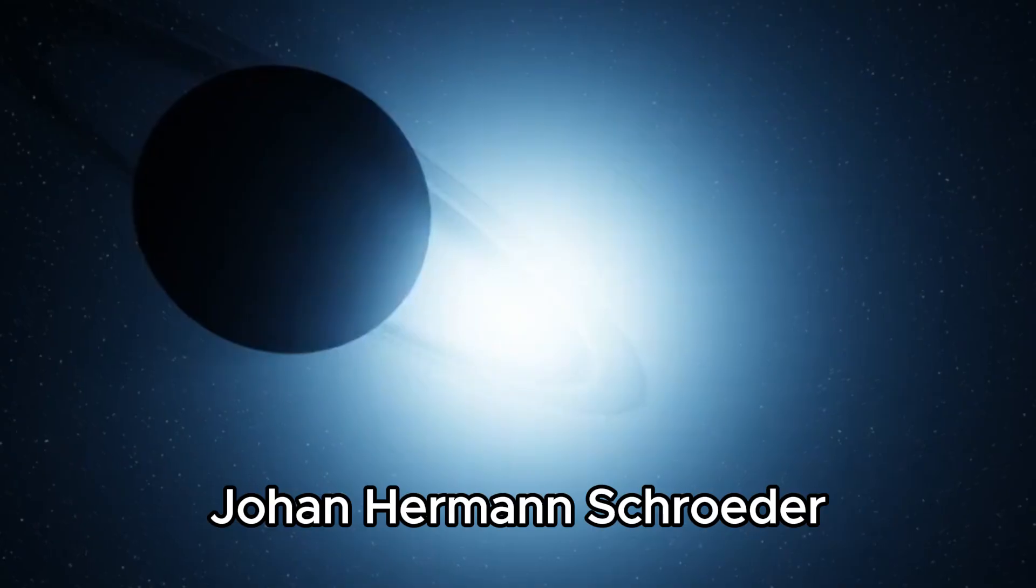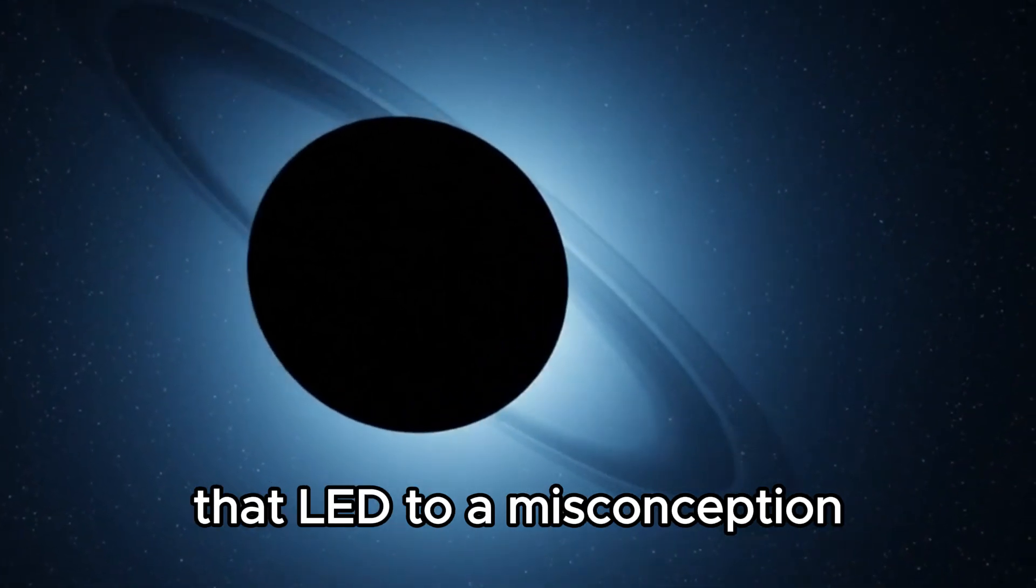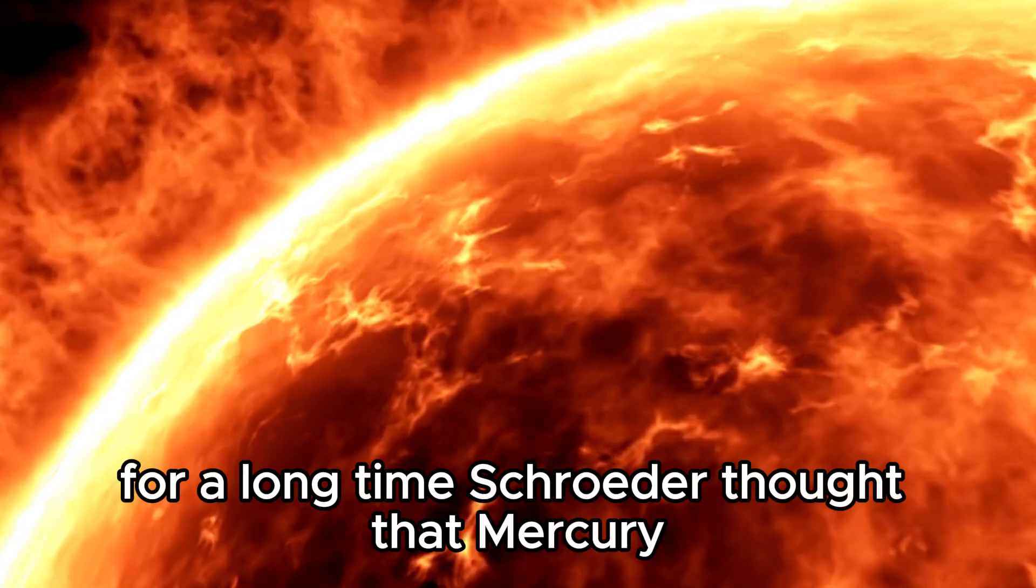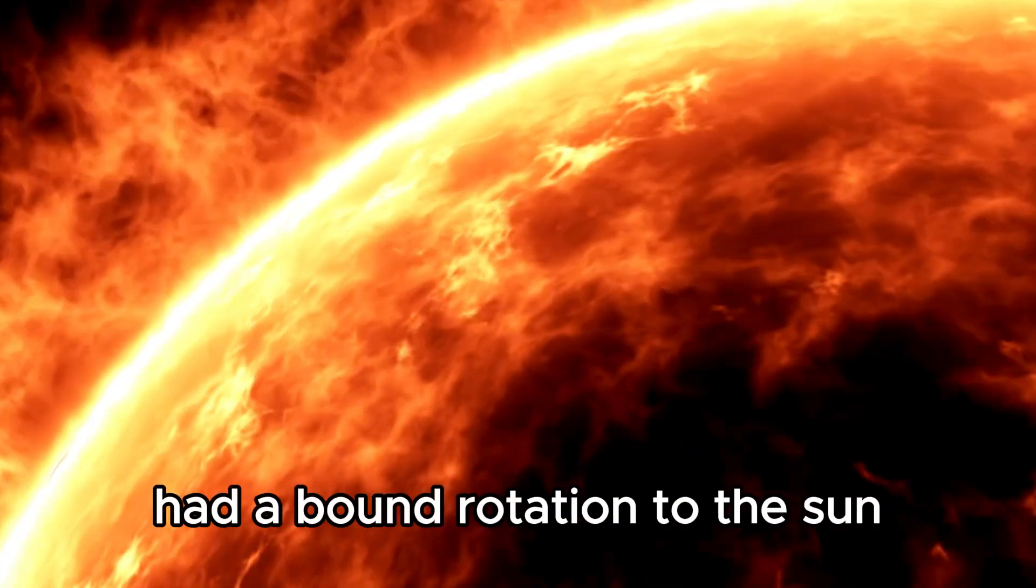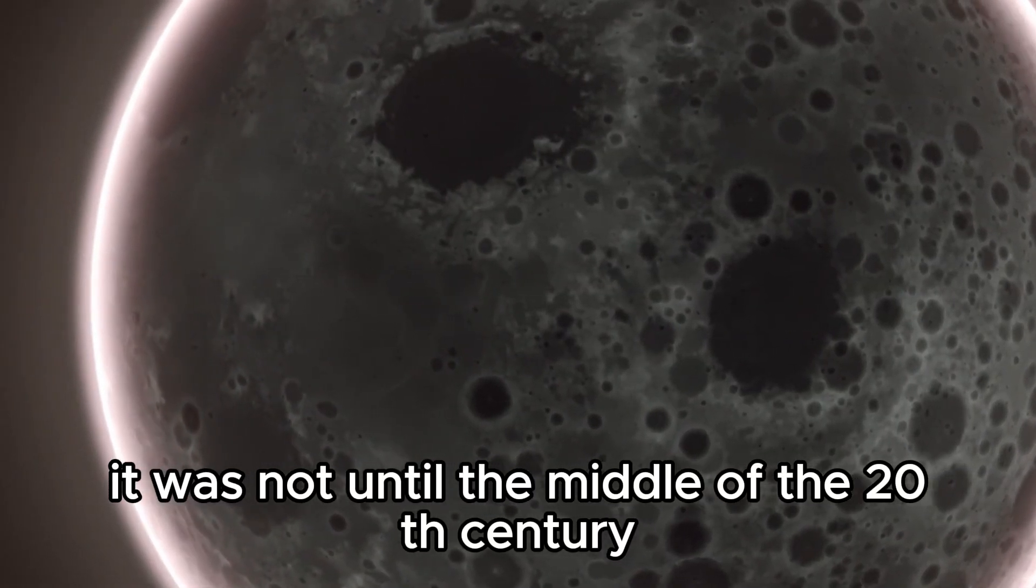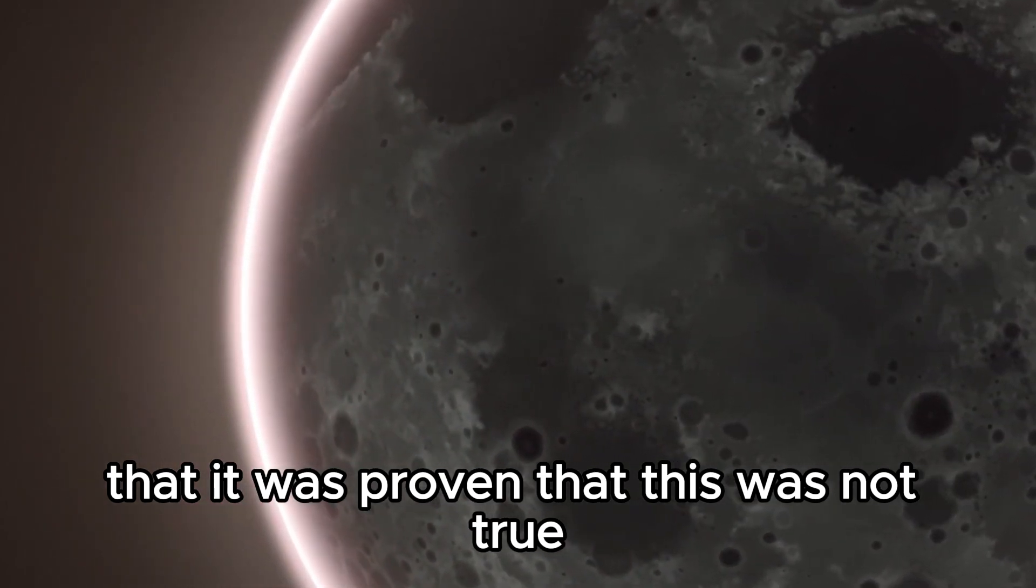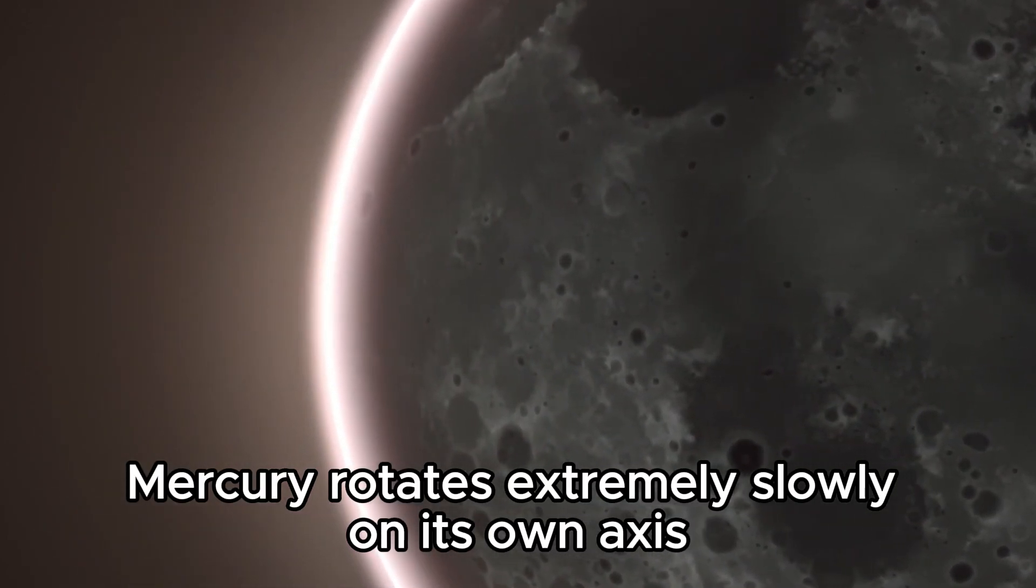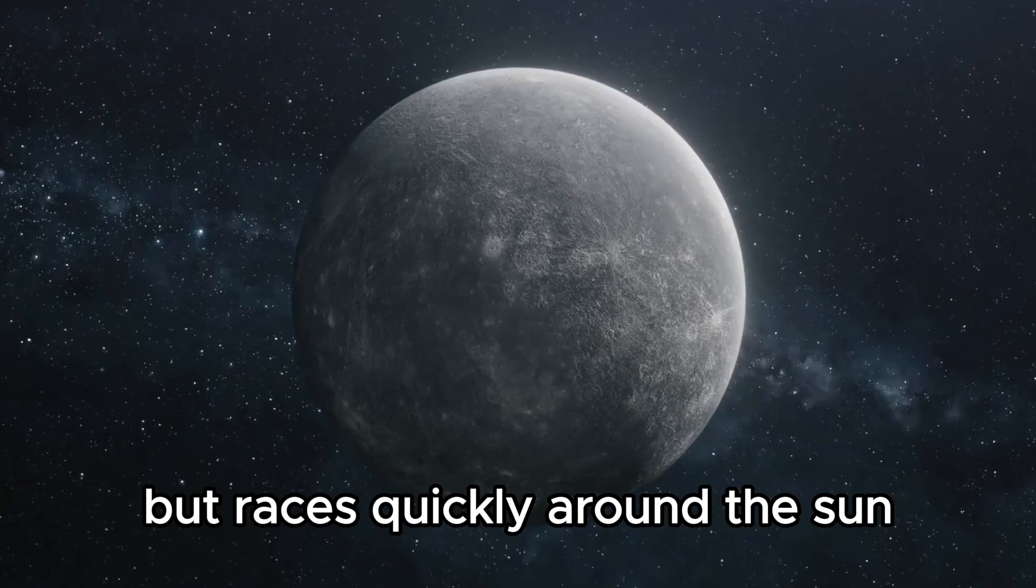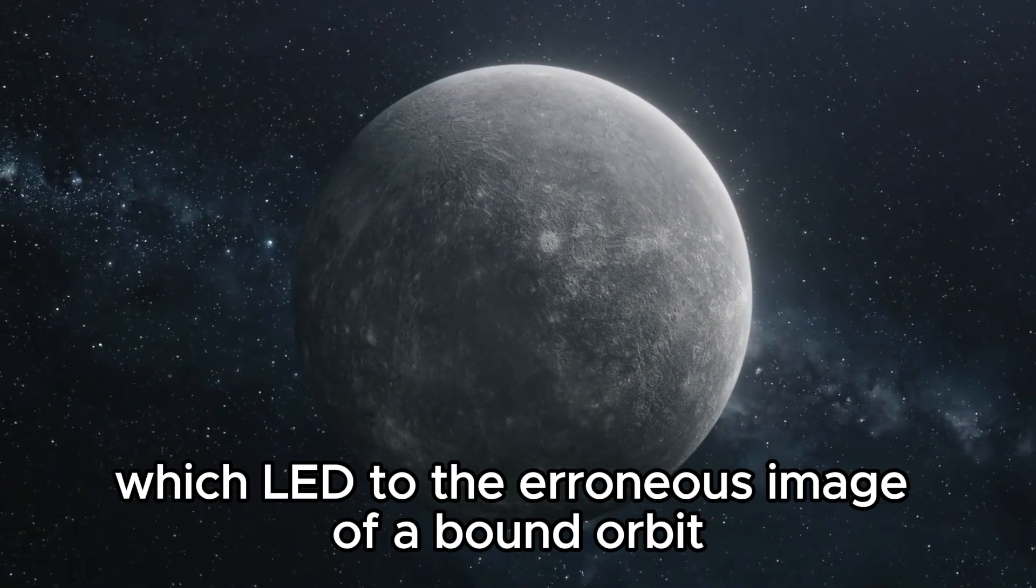In 1771, the German astronomer Johann Hermann Schroeder studied the rotation of the planet and made a blatant mistake. Schroeder thought that Mercury had a bound rotation to the Sun, similar to the Moon to the Earth. It was not until the middle of the 20th century that it was proven this was not true. Mercury rotates extremely slowly on its own axis but races quickly around the Sun.